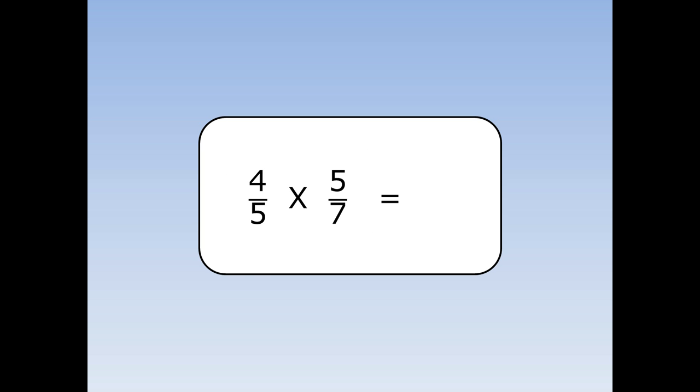4 fifths times 5 sevenths. I've got a 5 on the top and a 5 on the bottom, so I'm going to divide them both by 5. 5 divided by 5 is 1, and I continue as normal. Top by top: 4 times 1 is 4, and 1 times 7 is 7.